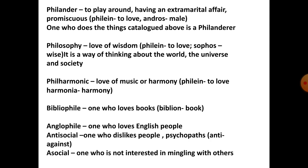Next is 'philosophy'. Etymologically, 'philene' means love and 'sophos' means wise — so love of wisdom. When we talk about wisdom, prudence, and understanding, that is philosophy. Basically, philosophy is a way of thinking about the world, the universe, and society. The person who thinks deeply about such fundamental questions is a philosopher, and what they study is philosophy. Next is 'philharmonic', which etymologically means love of musical harmony — 'philene' means to love and 'harmonia' means harmony.